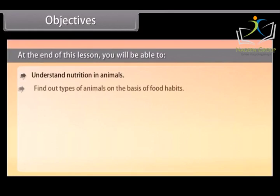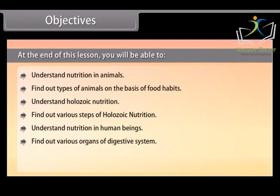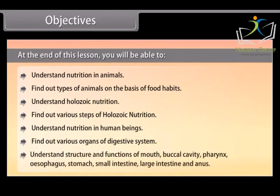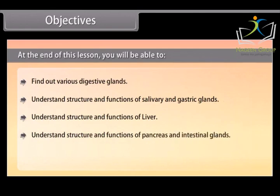At the end of this lesson, you will be able to: understand nutrition in animals; find out types of animals on the basis of food habits; understand holozoic nutrition; find out various steps of holozoic nutrition; understand nutrition in human beings; find out various organs of the digestive system including mouth, buccal cavity, pharynx, esophagus, stomach, small intestine, large intestine, and anus; and understand structure and functions of digestive glands including salivary glands, gastric glands, liver, pancreas, and intestinal glands.